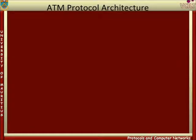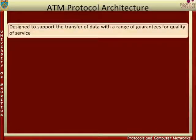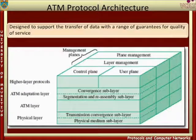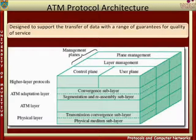The Asynchronous Transfer Mode, ATM, protocol architecture is designed to support the transfer of data with a range of guarantees for quality of service. The user data is divided into small, fixed-length packets called cells and transported over virtual connections. The figure shows the reference model for ATM. The first thing to notice is that, as well as layers, the model has planes. The functions for transferring user data are located in the user plane.